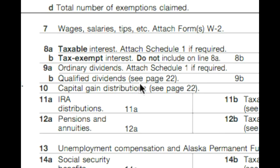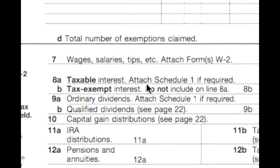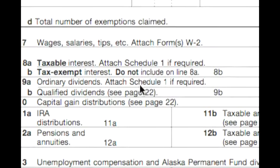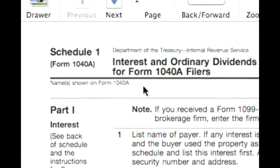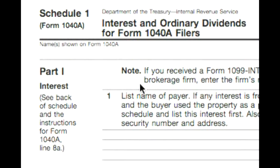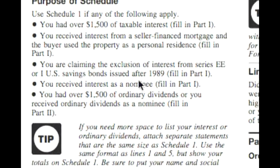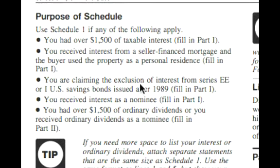It references Schedule 1 for both taxable interest and ordinary dividends. Here's what Schedule 1 looks like. Part one is to list interest by payer, and part two is to list ordinary dividends by payer. You use this form if you have more than fifteen hundred dollars worth of taxable interest or more than fifteen hundred dollars worth of ordinary dividends.